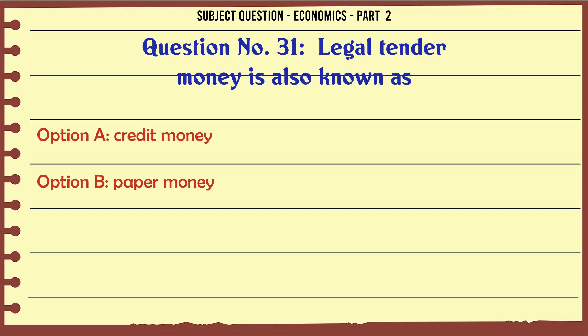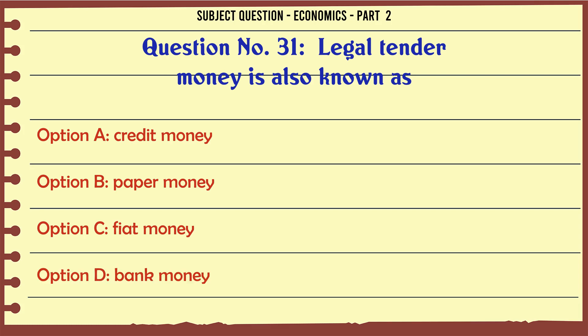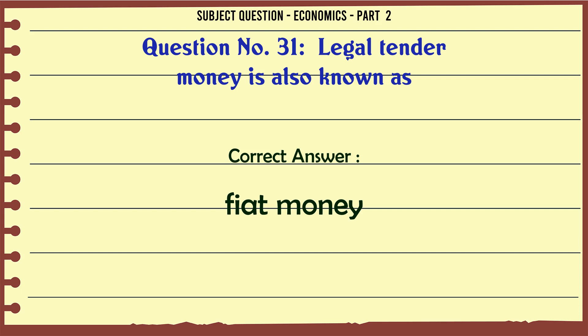Legal tender money is also known as: A. Credit money. B. Paper money. C. Fiat money. D. Bank money. The correct answer is: Fiat money.